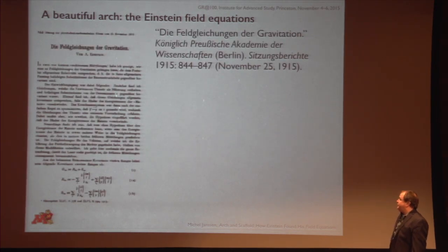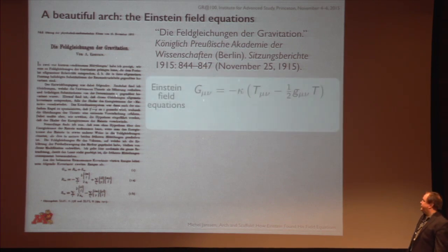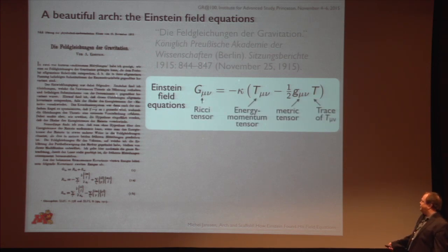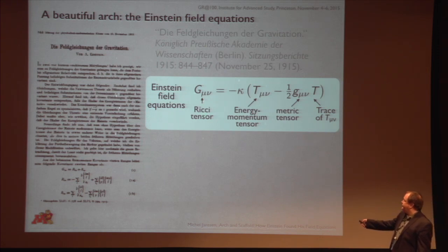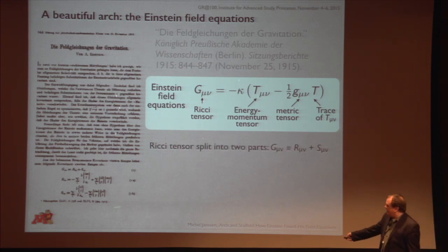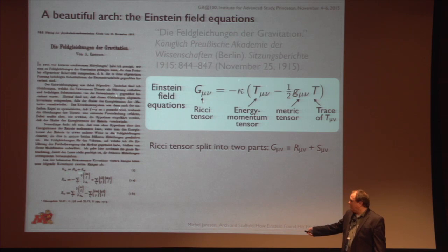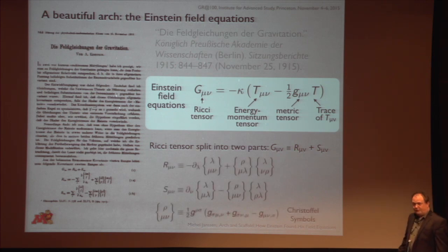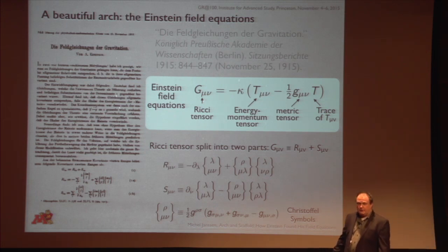So we end up with this beautiful arch that we've admired since. Here are the Einstein field equations the way Einstein wrote them. You see g mu nu on the left-hand side — and note that in Einstein's notation the g is just the Ricci tensor. Here is your energy-momentum tensor, metric tensor, and the trace. What you see is that Einstein still splits the Ricci tensor into two parts, using R for one part and S for another part, defined in terms of the Christoffel symbols, which in turn are defined in terms of the metric and its derivatives.